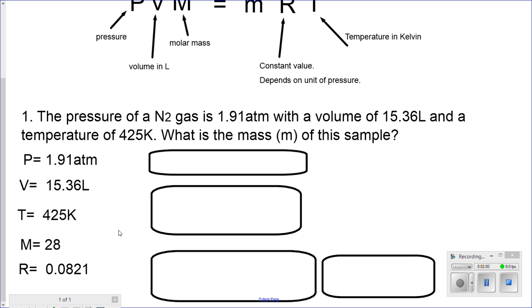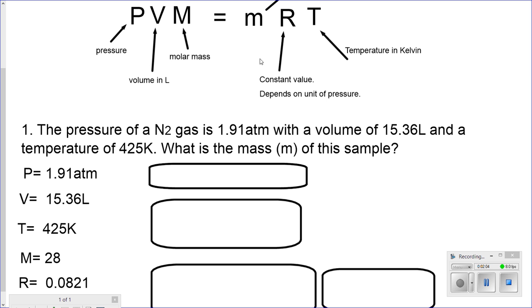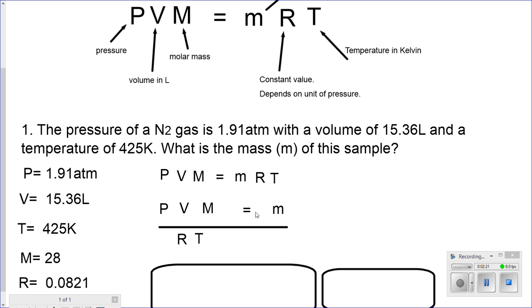I'm looking for small m. If I have the equation PVM equals mRT, I will move R to the bottom and move T to the bottom, leaving small m alone. I move the M, the R, and the T to the bottom, leaving m alone at the top. This is how it looks: PVM divided by RT equals m.